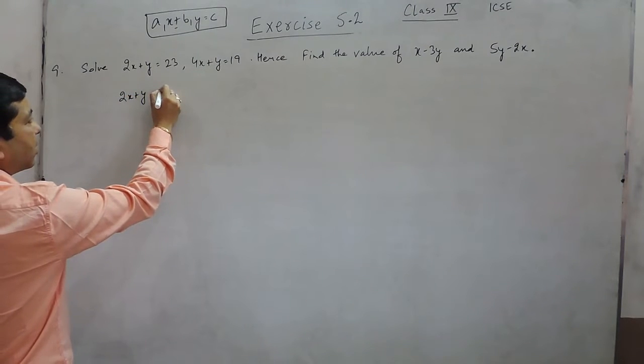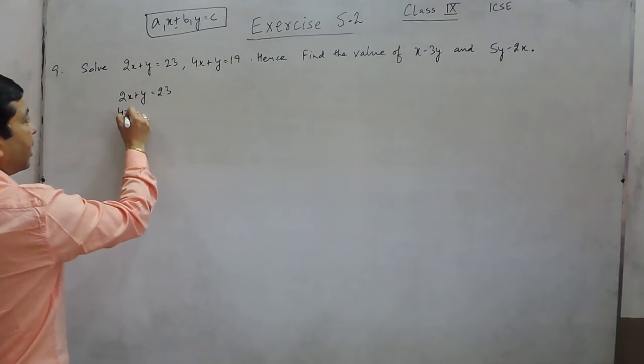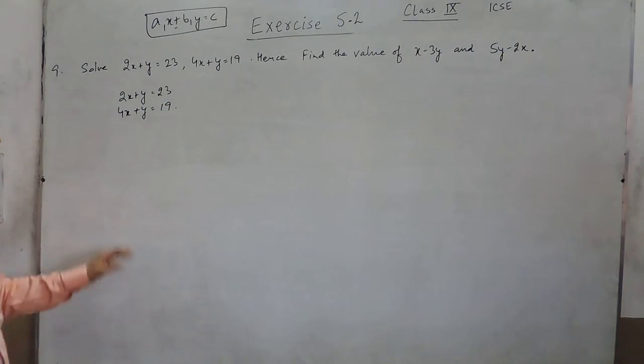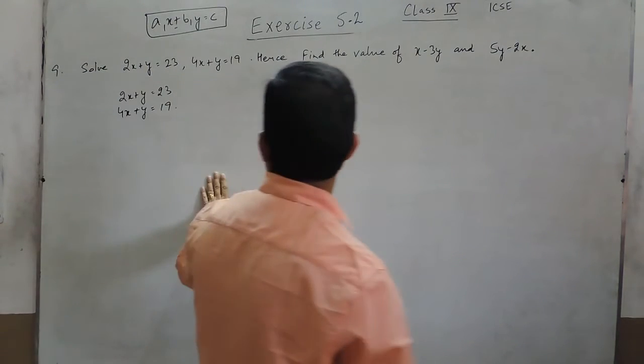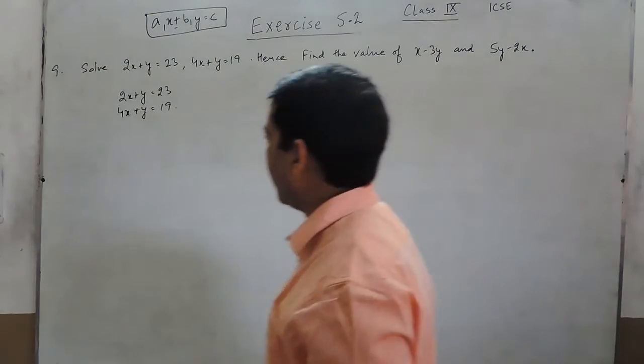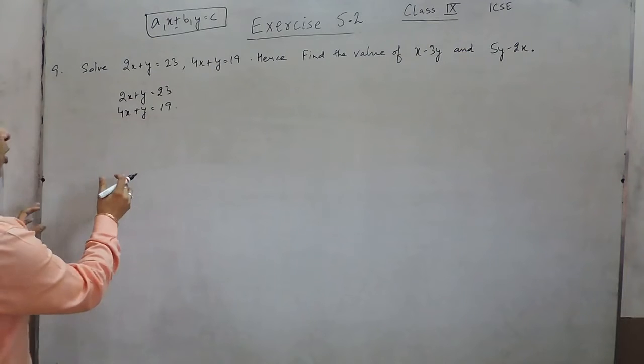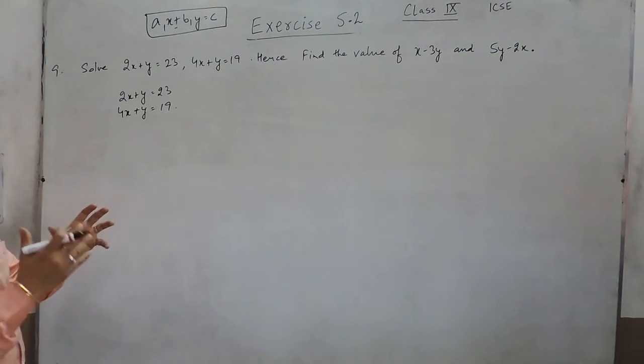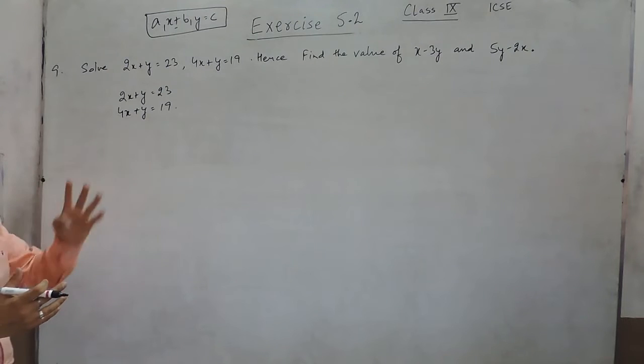Now I am telling you in how many methods we can solve it. First we have to find the value of x and y, then put it in x minus 3y and 5y minus 2x. The important thing is that in the elimination method I can do it in 4 different ways.